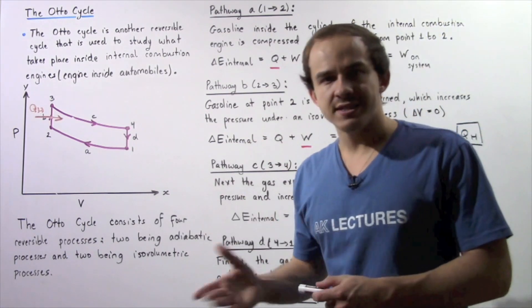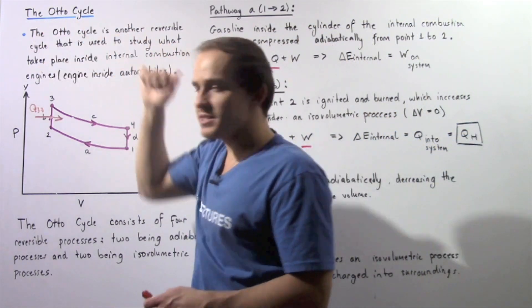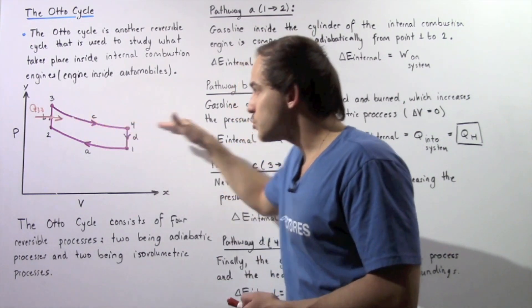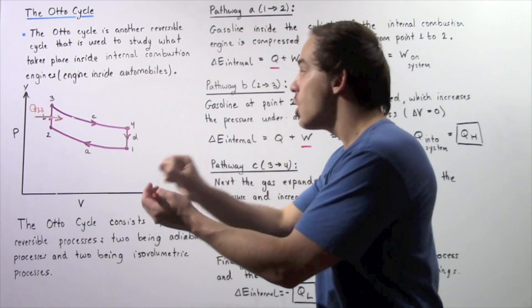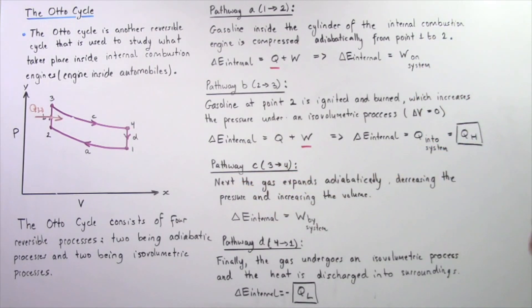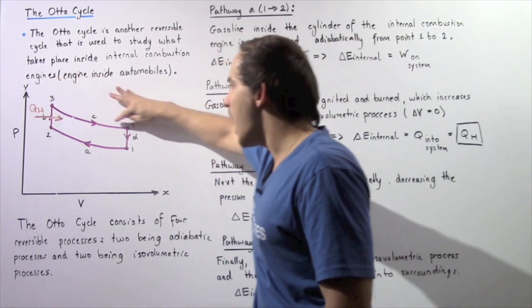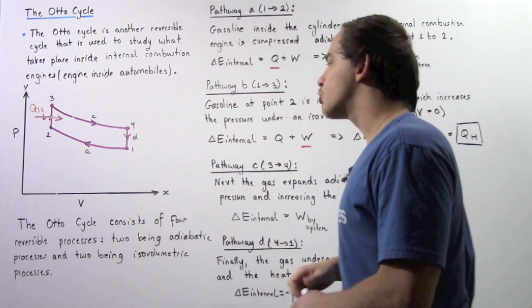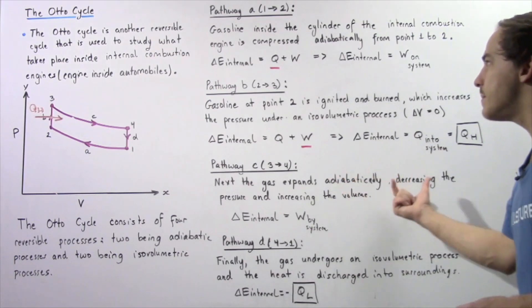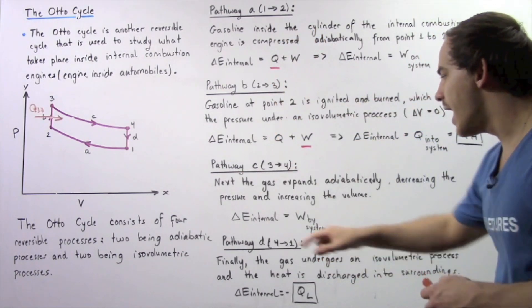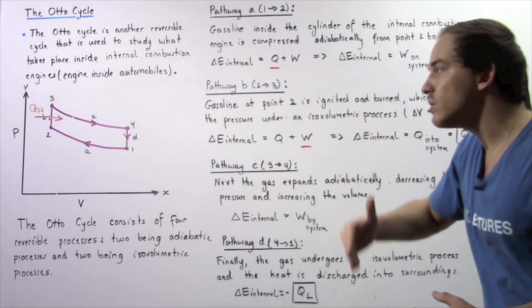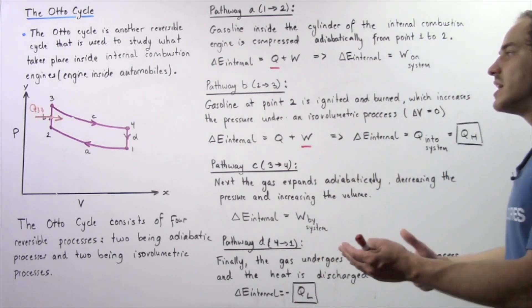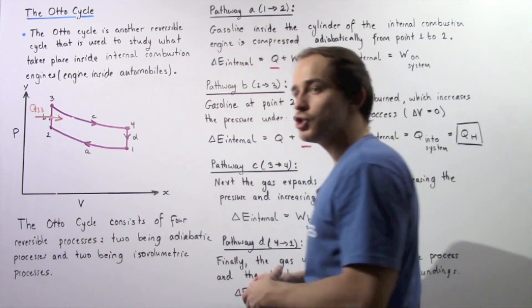Pathway C begins at position three and ends at position four. This is once again an adiabatic process, but now instead of compressing, we're expanding. The gas expands adiabatically, decreasing the pressure and increasing the volume. Our pressure drops as we go from three to four and our volume increases. Because we're dealing with an adiabatic expansion, Q is zero. This implies the change in internal energy is equal to the work done by our system on the surroundings, since our volume increases.